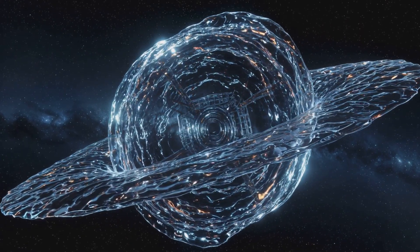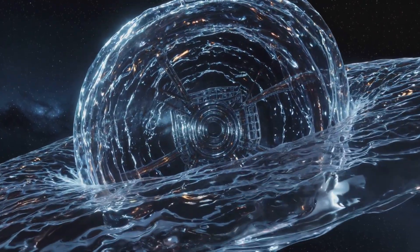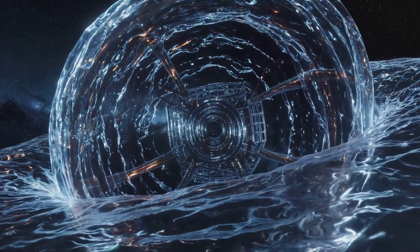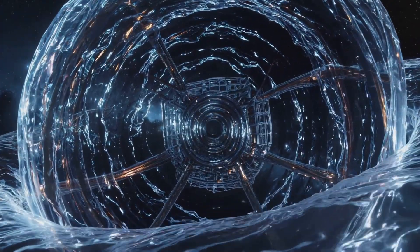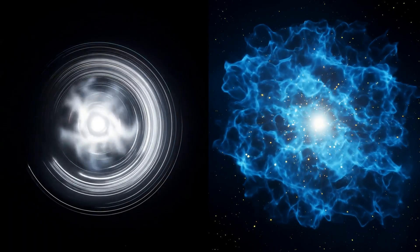From this interference field, gravity arises. As light spins and overlaps, its patterns form gradients, curvatures in the flow of information. These curvatures become spacetime geometry.